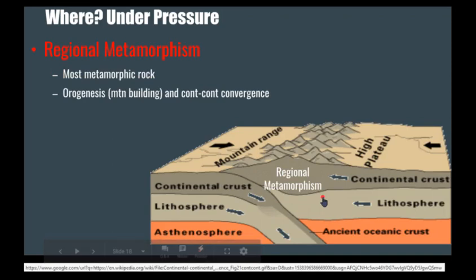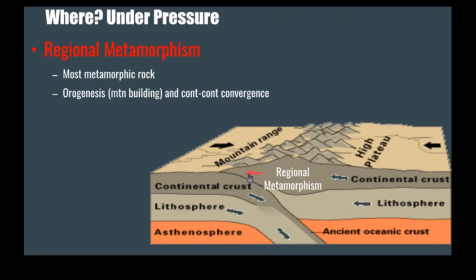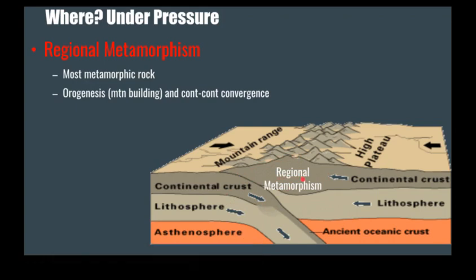Most metamorphic rock is made in areas of regional metamorphism. These are large regions where you have mountain building happening, and a lot of times it's related to plate tectonic boundaries. Here is a continent-continent convergent zone where two pieces of continental crust are colliding, creating these large mountains. At the root and heart of these large mountains, you're creating significant amounts of differential stress, which in turn creates large amounts of interesting metamorphic rocks.